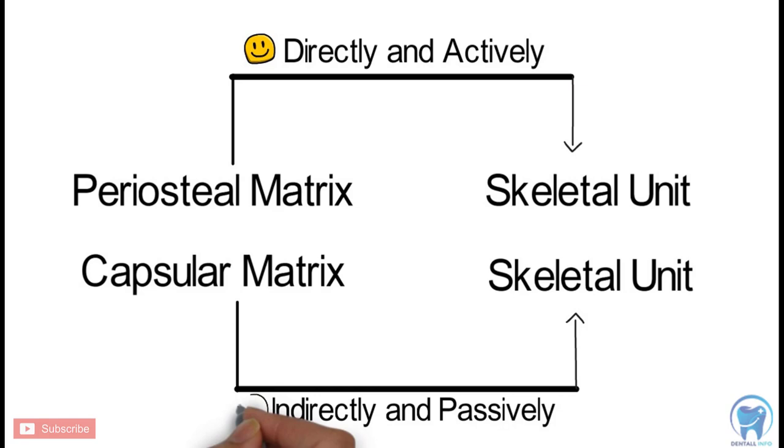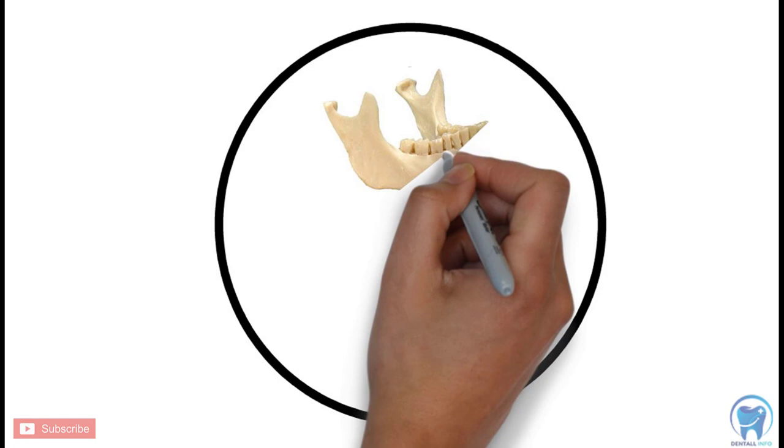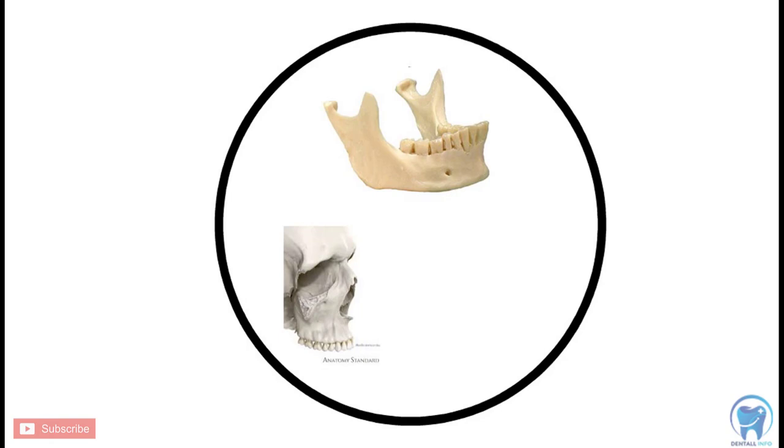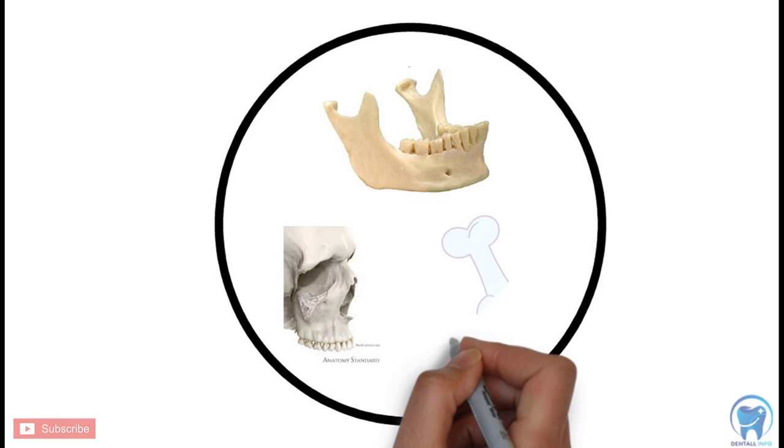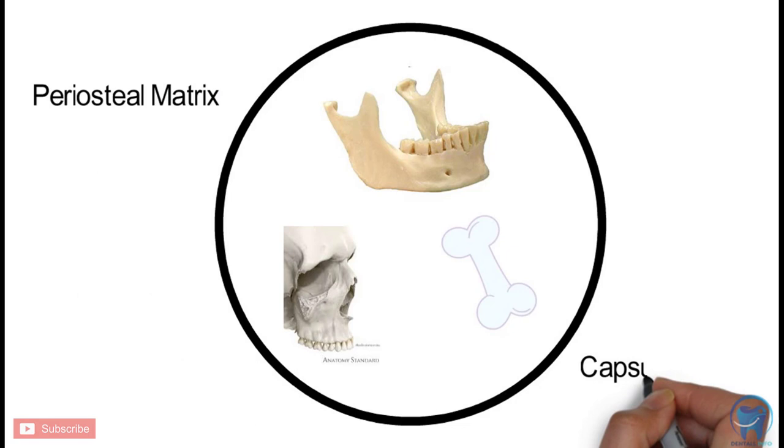Now let's summarize what we have learnt in the functional matrix concept. The functional matrix concept states that there are a number of changes occurring in the origin, form, position, and growth of the skeletal tissues and organs. These skeletal tissues may include maxilla, mandible, or other skeletal tissues. In contrast to the previous studies which proposed the influence of sutures and cartilages on the skeletal tissues, Melvin Moss proposed that the specifically related non-skeletal tissues, organs, or functioning spaces were responsible for the events and processes occurring in the skeletal tissues.